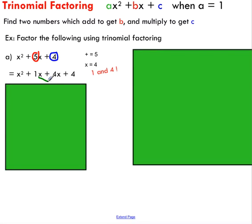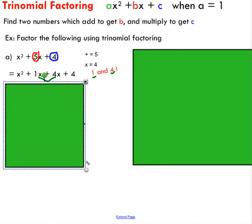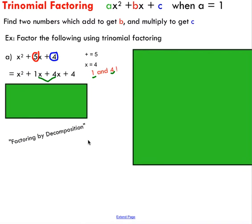What you're going to do is take your middle term — your b term — and break it up into two separate terms using the numbers you chose. This is called decomposition, or factoring by decomposition. You take your b term and decompose it into two terms. If you check, one x plus four x is five x, so we haven't changed our expression — we've just rewritten it.